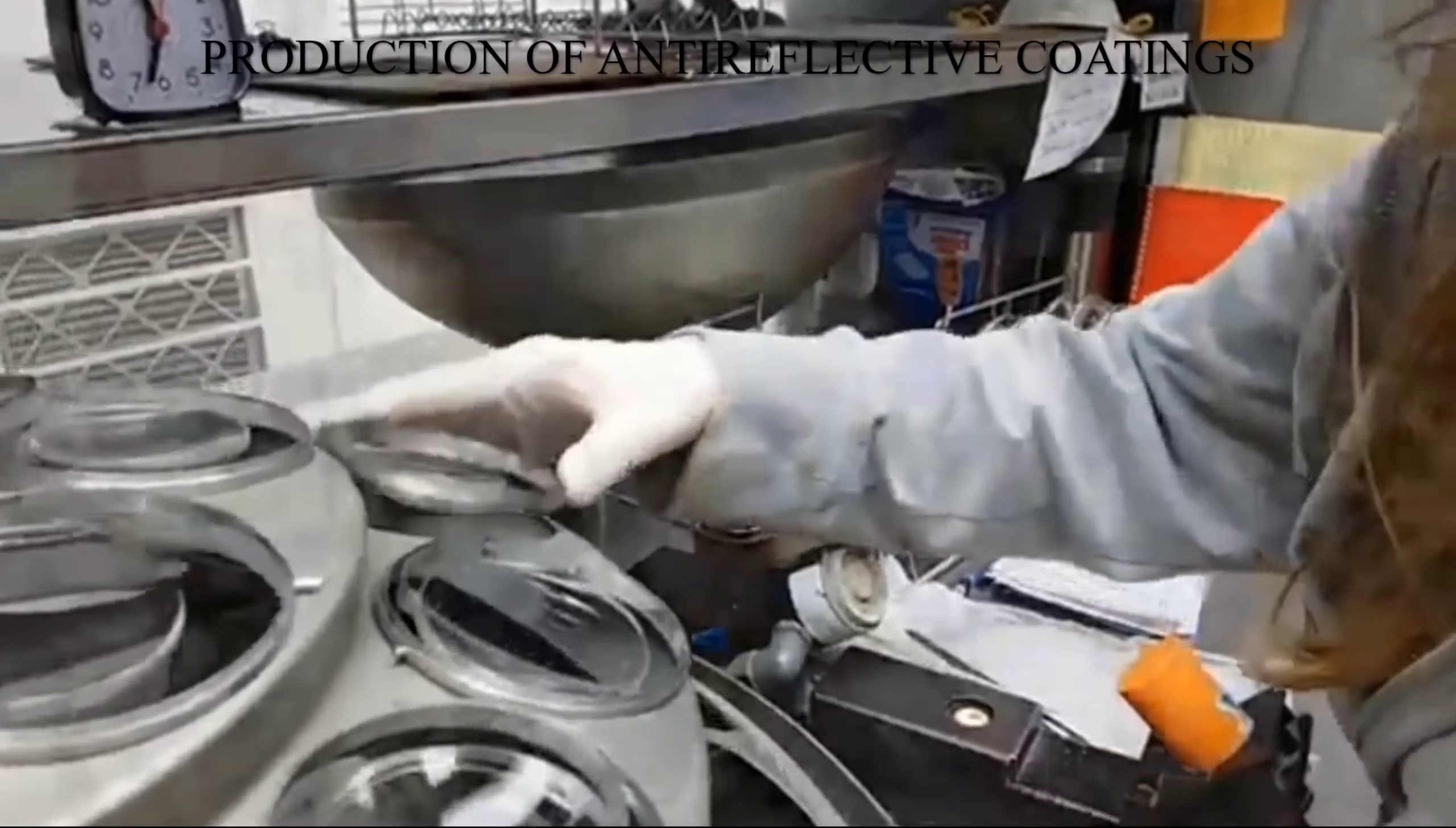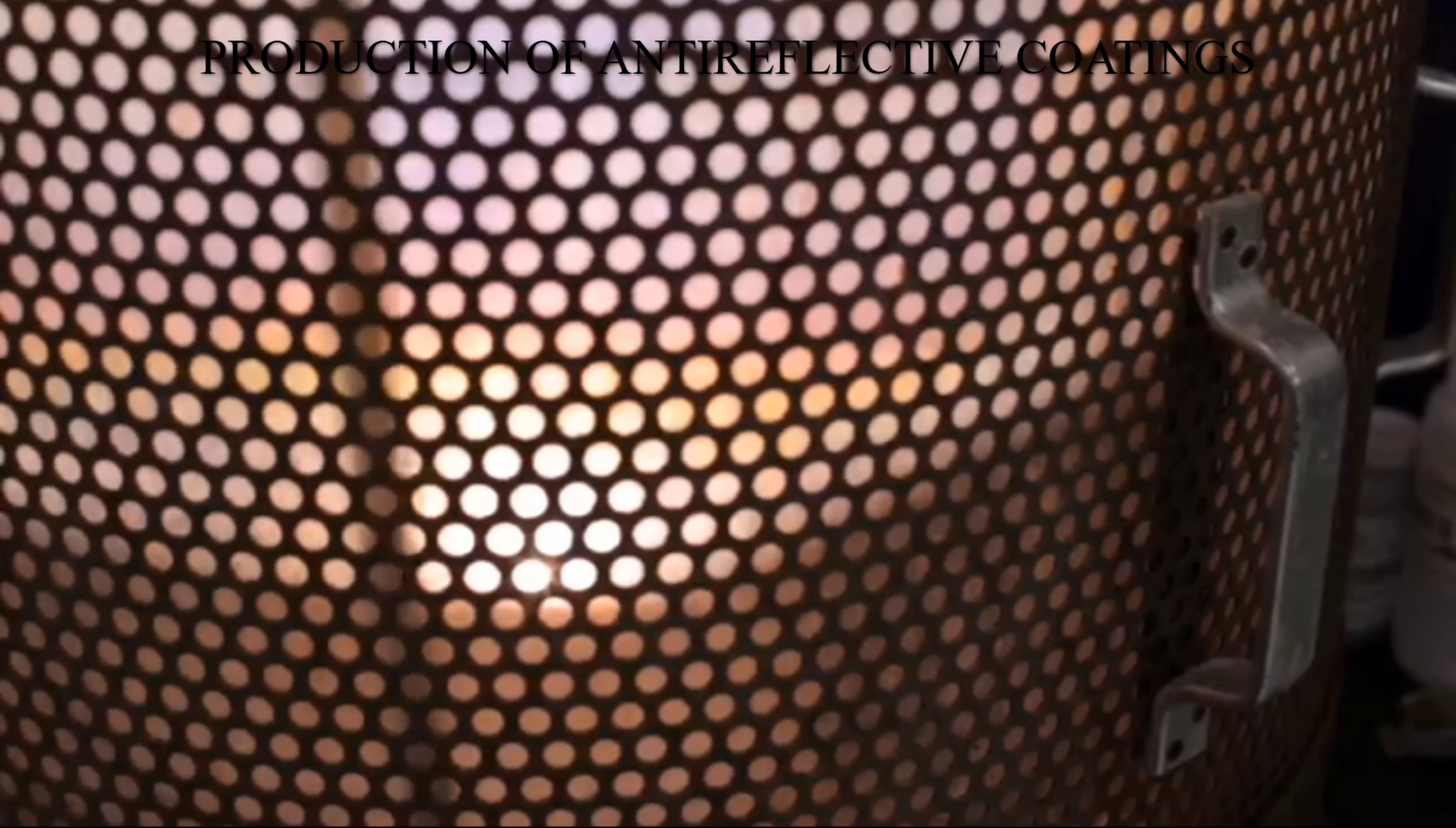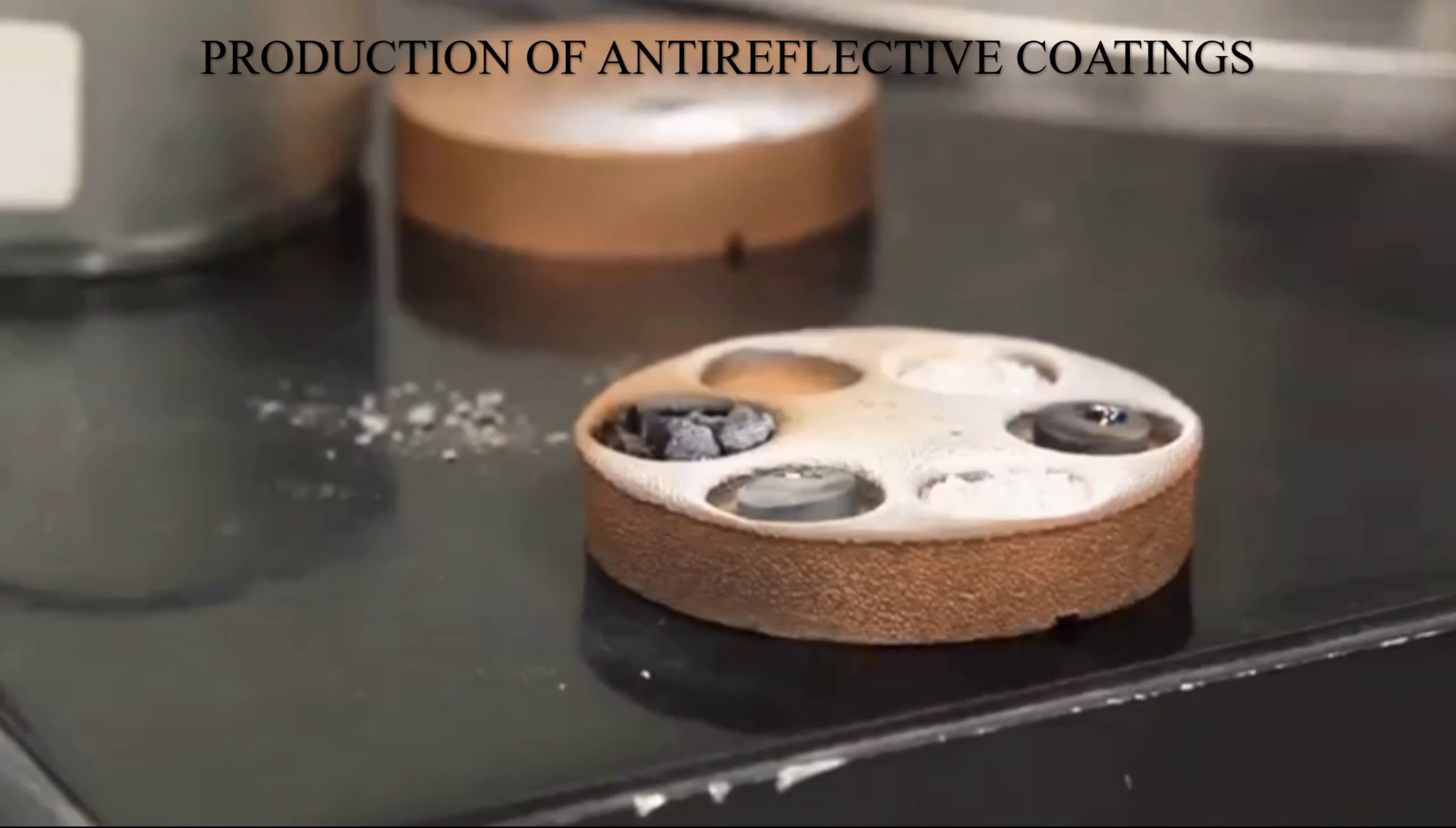The racks are then loaded into the coating chamber. The door of the chamber is sealed and the air is pumped out of the chamber to create a vacuum. The lens is then heated to about 300 degrees Celsius which contributes to the hardness of the coating. Magnesium fluoride pellets are then heated to about 2500 degrees Celsius in order to produce vaporization. As the magnesium fluoride evaporates, it is deposited on the surface of the lens.